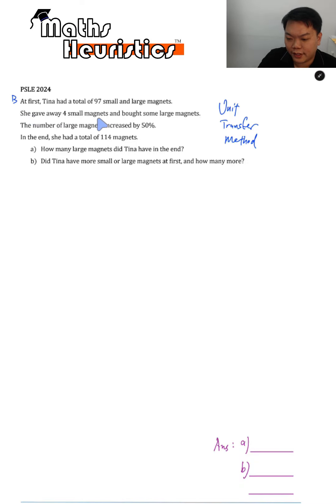She gave away four small magnets, bought some large magnets. That's the change. Number of large magnets increased by 50%. That's another change.